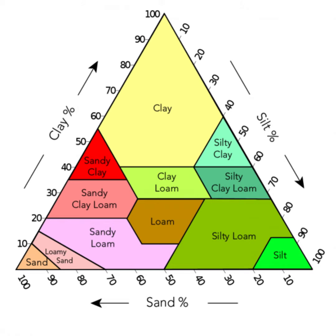Here are the key features of the soil texture triangle. Apexes: the triangle has three apexes, each representing one of the three soil particle types — sand, silt, and clay.